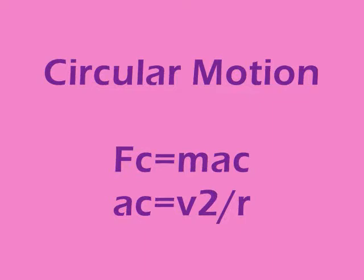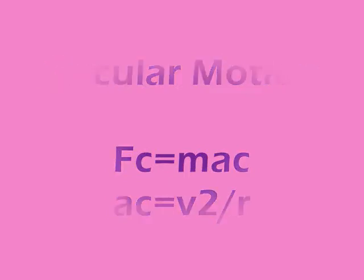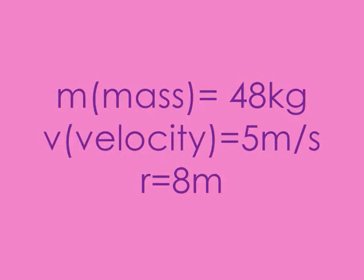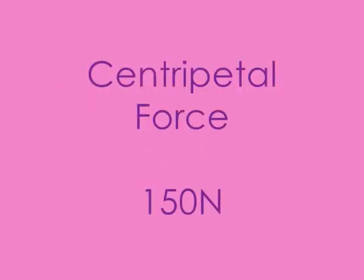The equation you need to know for circular motion is force is equal to mass times acceleration. We're going to say acceleration is equal to velocity squared over radius. For this equation, we know my mass is 48 kilograms, my velocity going around the turn was 5 meters per second, and the radius of the turn of the track was 8 meters. After plugging that into the equation, you find the centripetal force of me going around the turn to be 150 newtons.